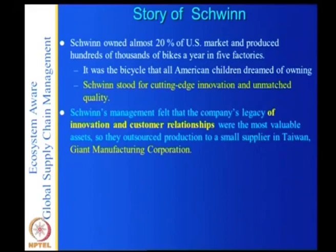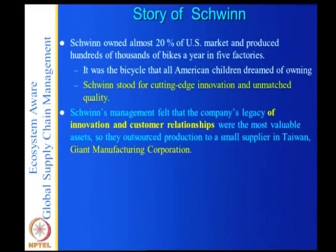Schwinn's management felt that the company's legacy of innovation and customer relationships were the most valuable assets, and outsourced production to a small supplier in Taiwan — Giant Manufacturing Corporation. This is the core competency theory question: they identified innovation and customer relationships as most valuable, and outsourced production to Giant. Schwinn did not ask for a stake in Giant, even as it handed over four-fifths — 80% — of bicycle production to the partner.